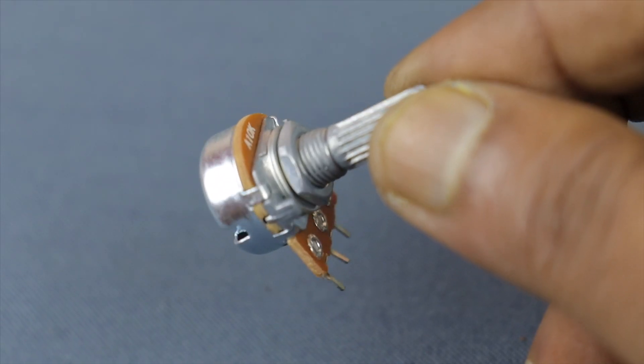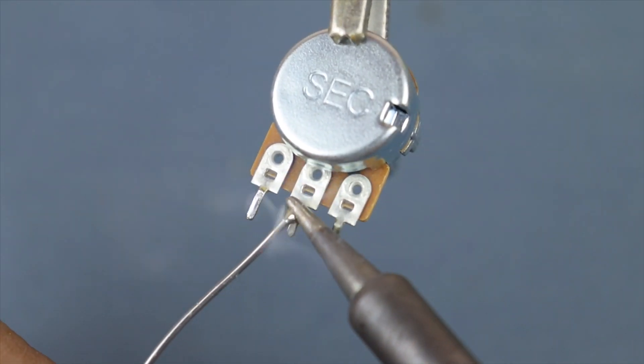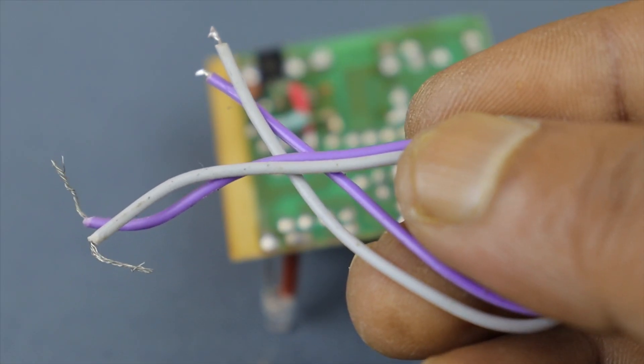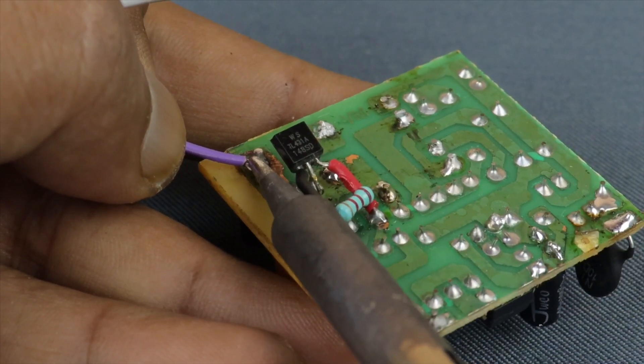Take one 10K ohm potentiometer. Connect it to the positive and the reference pin.